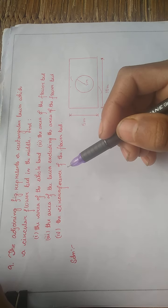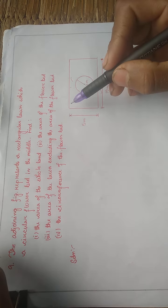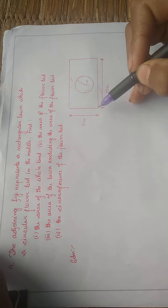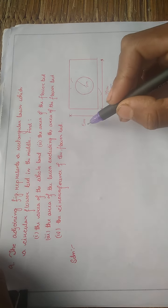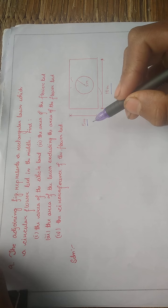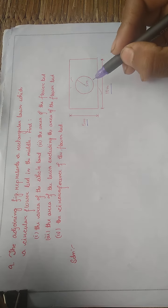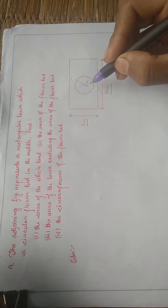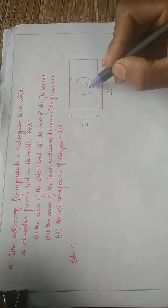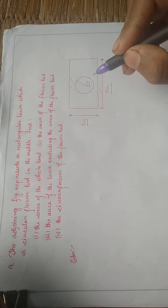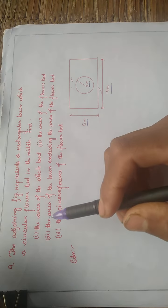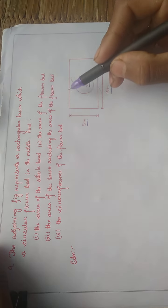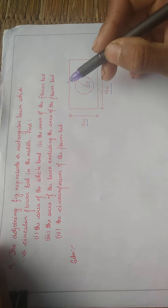This figure shows a rectangular lawn measuring 3 meters by 5 meters, with a circular flower bed in the middle. The circular flower bed has a radius of 2 meters. We need to find the area of the whole lawn, which is a rectangular shape.